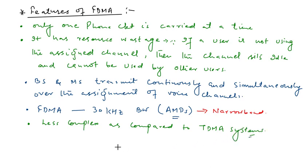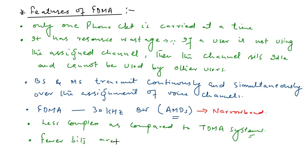In TDMA, the total frequency spectrum is divided in terms of time, and particular users are given time slots in which they can communicate; otherwise they cannot communicate. This makes TDMA more complex compared to FDMA. Also, since mobile stations and base stations in FDMA transmit continuously, the system requires fewer bits for synchronization and framing overhead.